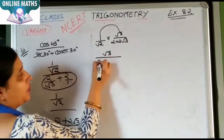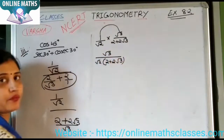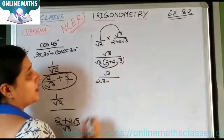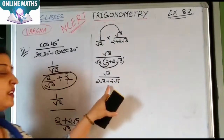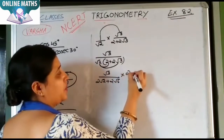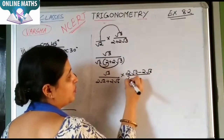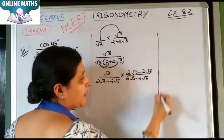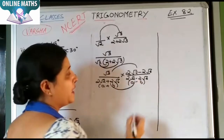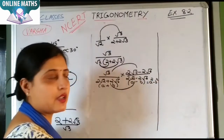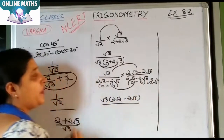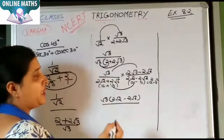Opening the bracket: under root 2, bracket, 2 plus 2 under root 3, minus root 3, bracket open, 2 under root 2 plus 2 under root 6. Now rationalize the denominator — use plus sign with minus sign. Multiply by 2 root 2 minus 2 root 6 upon 2 root 2 minus 2 root 6. This is the form (a+b)(a-b) which equals a squared minus b squared.